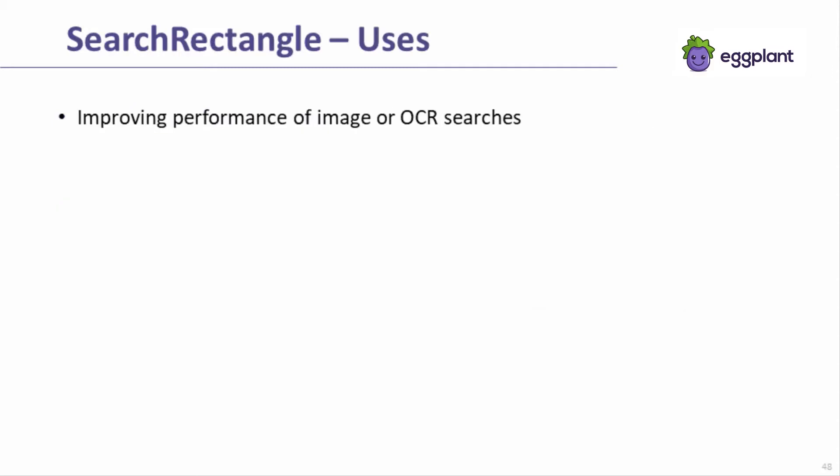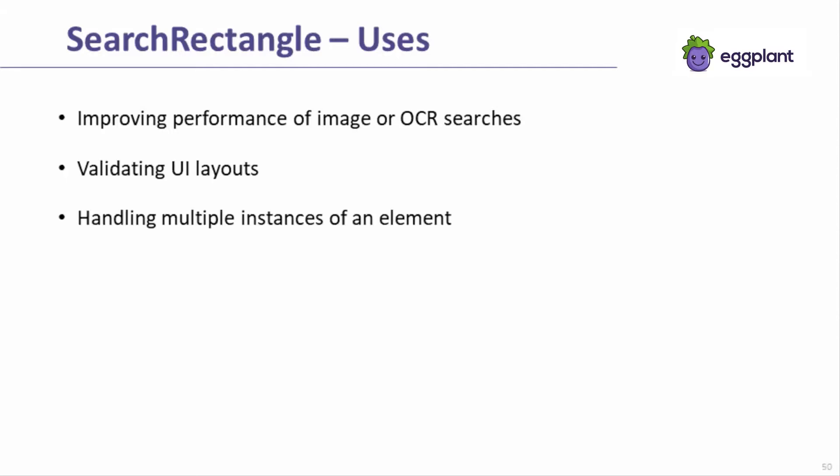Search rectangles have a few main uses. They are used to improve the performance of image and OCR searches by limiting the portion of the screen that needs to be analyzed or searched. They're also useful for validating UI layouts, as they provide a mechanism for determining whether an element is located in a certain part of the screen, or is located relative to another element. This training module will show how to use search rectangles in the context of handling multiple instances of an element on the SUT.